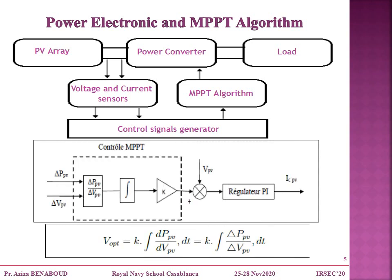Maximum power point tracking techniques are used to obtain maximum efficiency of a PV system. This algorithm checks the output of the PV module, compares it to the battery voltage, then determines the best power that the PV module can produce to charge the battery and converts it to the best voltage to get maximum current into the battery.